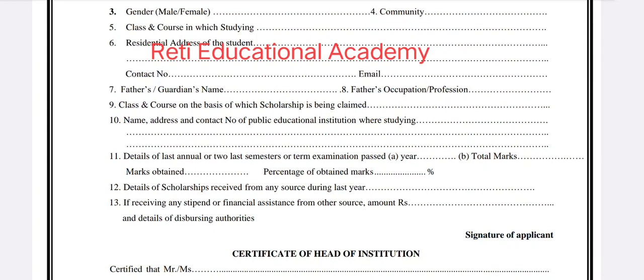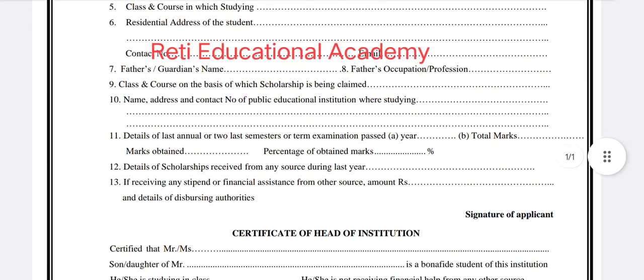Number 11 is the details of the last annual or last two semester examinations. If you are studying in college, provide last annual examination results. If you are in university, provide last two semester results — including total marks, marks obtained, and percentage.